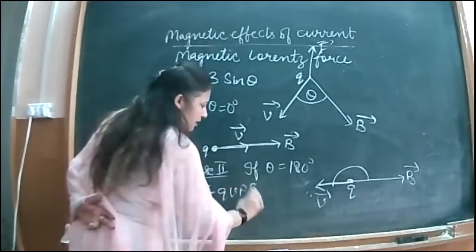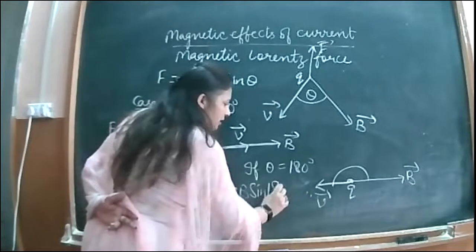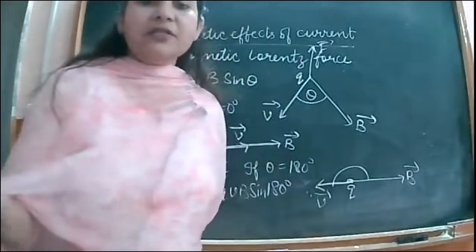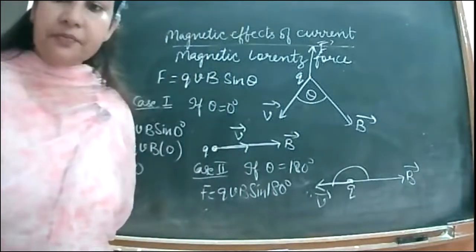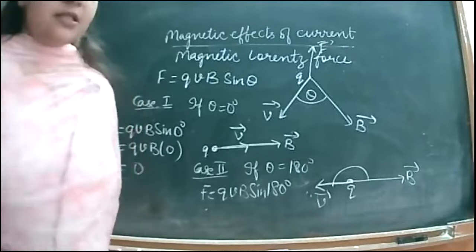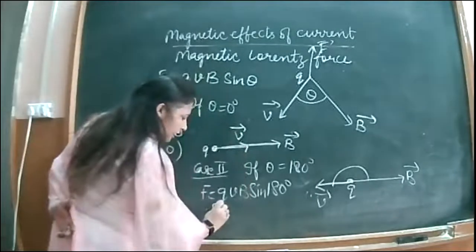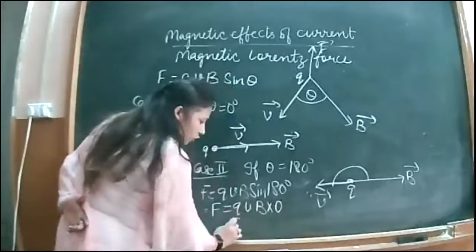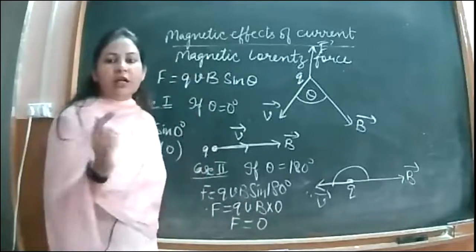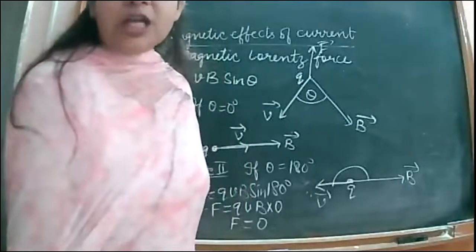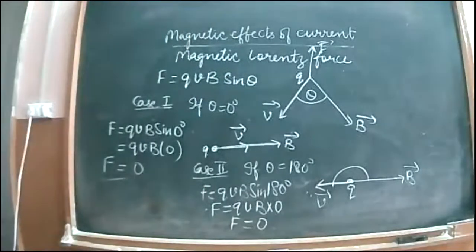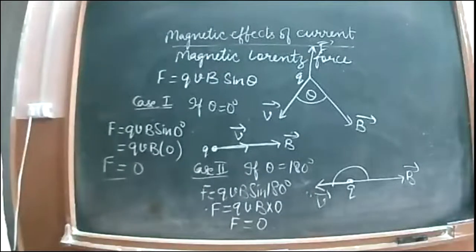Put theta = 180° in the formula: F = qvB sin 180°. The value of sin 180° is also zero. So again, no force acts on the charged particle. We conclude: if a charged particle is moving parallel or anti-parallel to the direction of the magnetic field, no magnetic Lorentz force will be experienced by it.